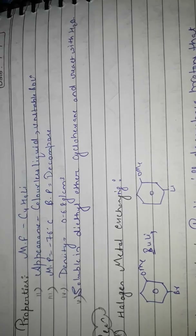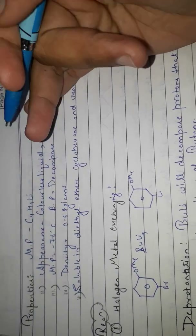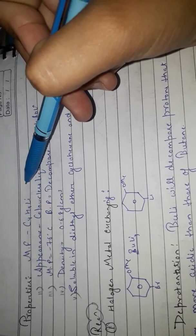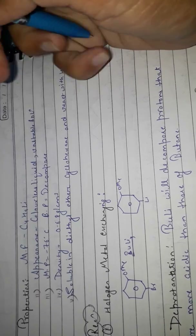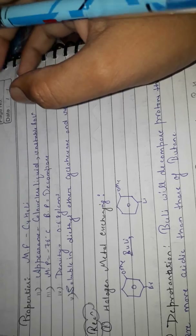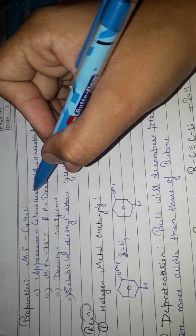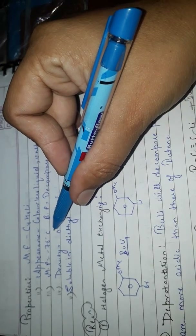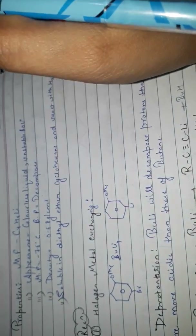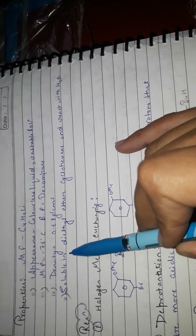Properties of n-butyl lithium: molecular formula C4H9Li. Appearance is a colorless liquid; it forms an unstable solution. Melting point is minus 76 degrees Celsius, and on boiling, n-butyl lithium decomposes. Density is 0.68 g/cm³. It is soluble in diethyl ether and cyclohexane, and reacts with H2O.